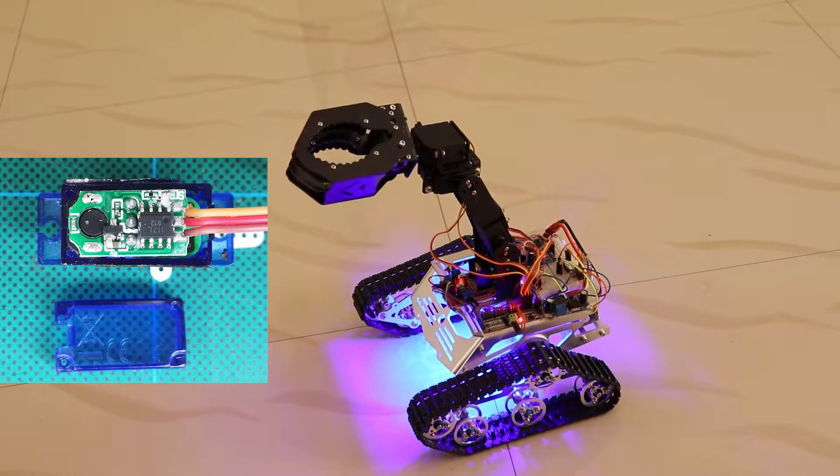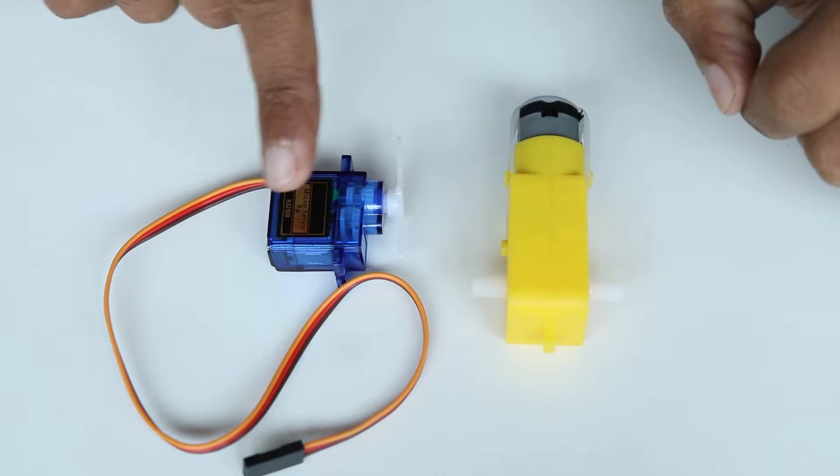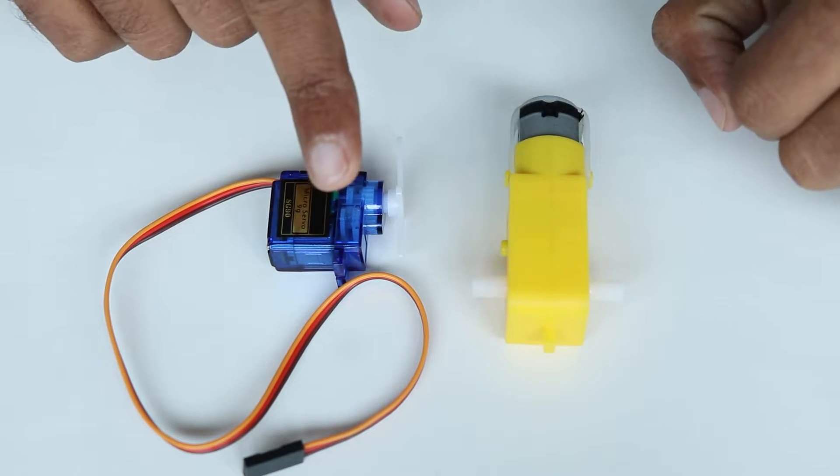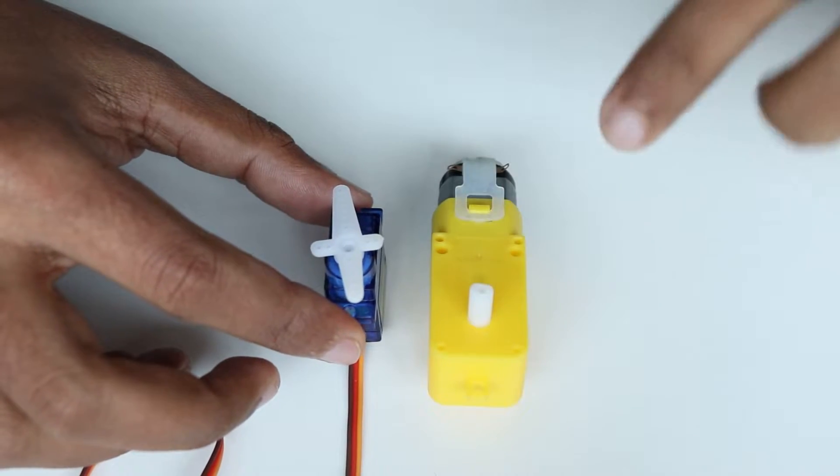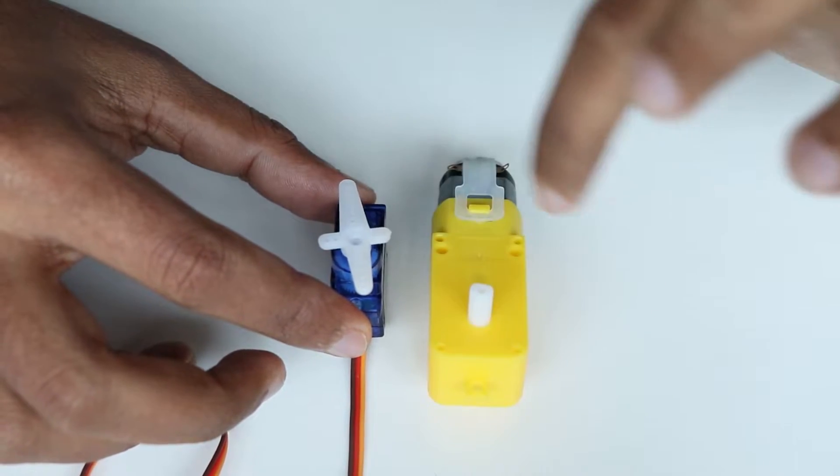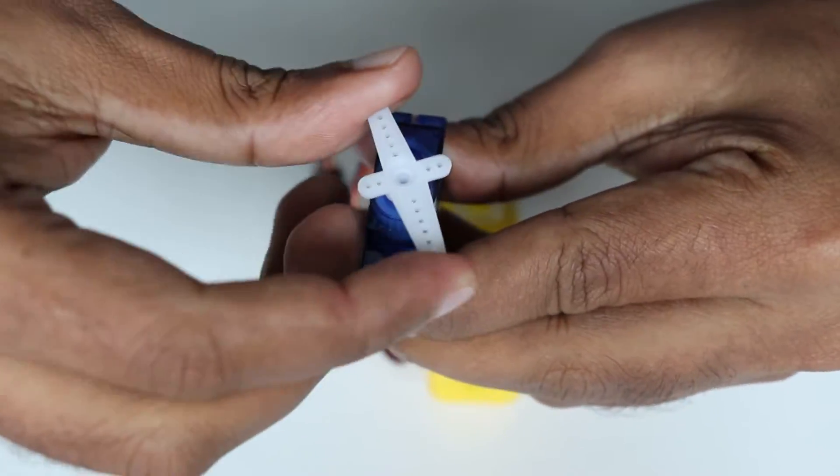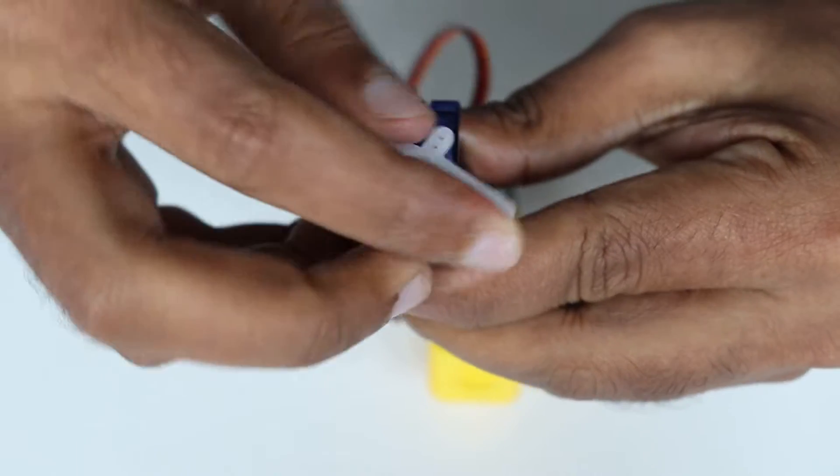But what is the difference between servo motor and the DC motor? Servo motor is basically a DC motor with some additional circuit. One major difference between the DC motor and the servo motor is unlike the DC motor, the rotation is not continuous in the case of servo motors.